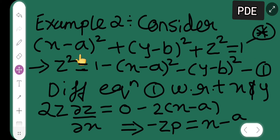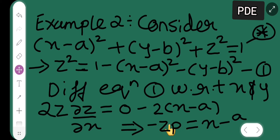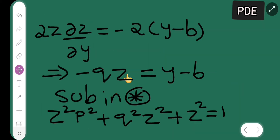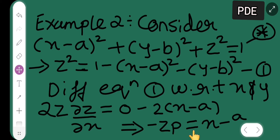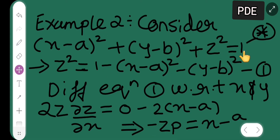Now substitute these into the star equation. x - a = -zp, and y - b = -qz. Substituting: squaring -zp gives z²p² (positive), and squaring -qz gives q²z² (positive). So the equation becomes z²p² + q²z² + z² = 1.